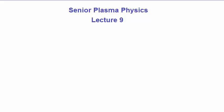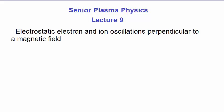Senior Plasma Physics, Lecture 9. We're now going to revisit electron and ion oscillations in a plasma, but this time in the presence of a magnetic field. The oscillations are going to be perpendicular to the direction of the magnetic field. Then we're going to leave the oscillation of particles in a plasma behind and look at the dispersion relation of electromagnetic waves passing through a plasma. We'll pick on the simplest case where the applied magnetic field is zero.